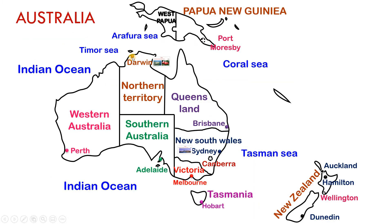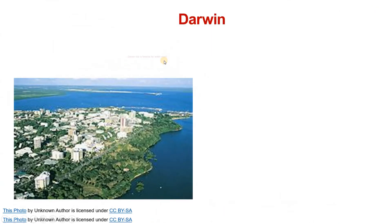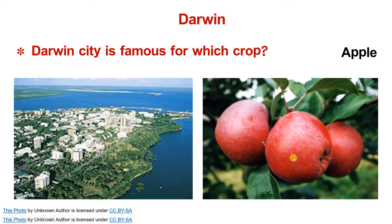Darwin City is located at the very top of Australia. Darwin City is famous for the apple crop.